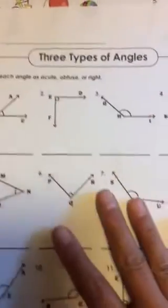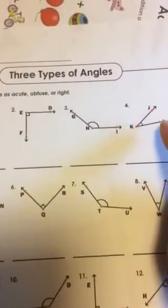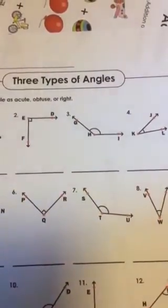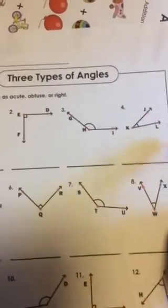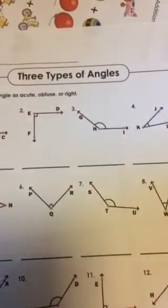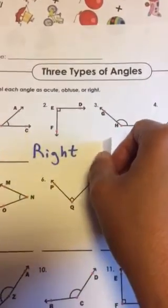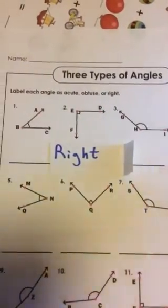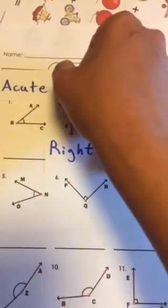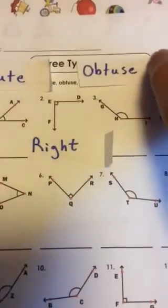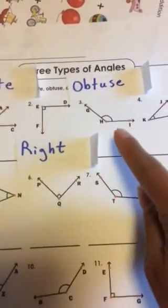Let's see if we can figure out what the other ones are. Let's look at number four. Number four looks pretty small to me. I think it would probably fit inside our right angle. So what do you think, guys — is it acute like number one, or is it obtuse like number three?